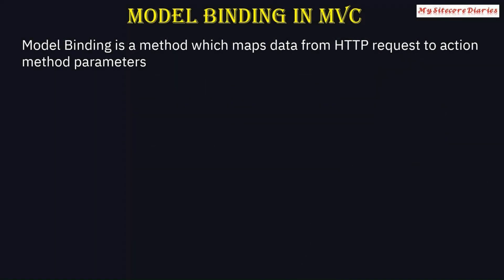Model binding is a method which maps data from an HTTP request to action method parameters. So basically, whatever HTTP request is coming, that request gets mapped to the action method parameters. There are primitive type bindings — simple and complex — so how does simple and complex binding work?